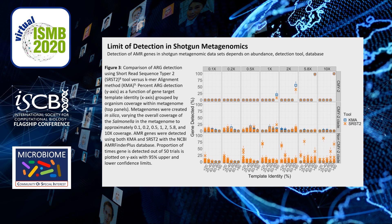We also tested different AMR detection tools for shotgun data. This figure shows an example of the limit of detection for the AMR gene CMY2. We produced a series of mock metagenomes with varying relative abundances of a Salmonella containing the CMY2 gene and ran different AMR detection tools on these datasets. To detect your gene of interest reliably, you need it to have relatively high coverage in your metagenome, and depending on the tool and cutoff used, you do have the potential for off-target hits.